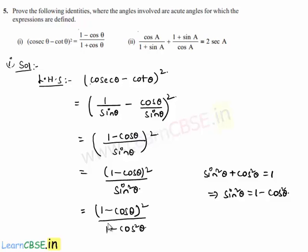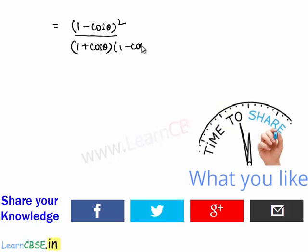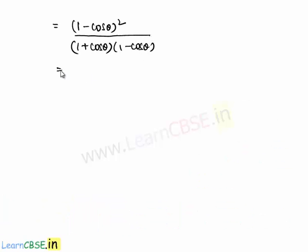Here 1 - cos² θ can be written as 1² - cos² θ, which is in the form a² - b² and can be factored as (1 + cos θ)(1 - cos θ). Therefore we get (1 - cos θ)² divided by (1 + cos θ)(1 - cos θ). The common factor (1 - cos θ) cancels, leaving us with (1 - cos θ) by (1 + cos θ), which is our right hand side.